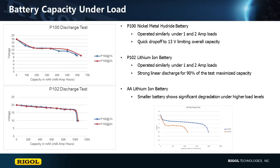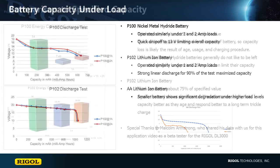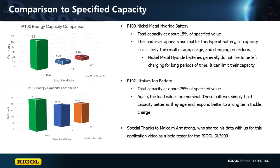Now let's compare these results to the specifications for the batteries. Here we see that the nickel metal hydride batteries are only operating at about 15% of their specified capacity. This is largely due to their age and the charging cycles.